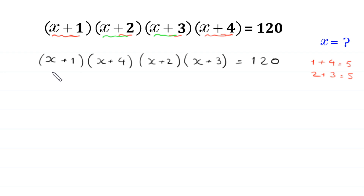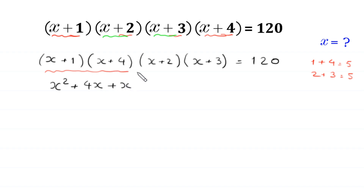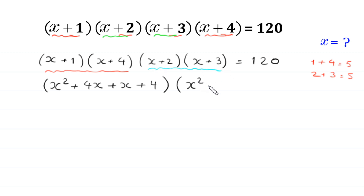Now we multiply (x+1)(x+4): x squared, plus 4x, plus x, plus 4, giving x²+5x+4. Then we multiply (x+2)(x+3): x squared, plus 3x, plus 2x, plus 6, giving x²+5x+6. So we have (x²+5x+4)(x²+5x+6) = 120.